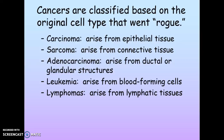Carcinoma arises from an epithelial tissue. Sarcoma arises from connective tissue. Adenocarcinoma from ductal or glandular structures. Leukemia from blood-forming cells, and lymphomas from lymphatic tissue. It's good to memorize these now because we will be talking about them later as we go on into the different systems.